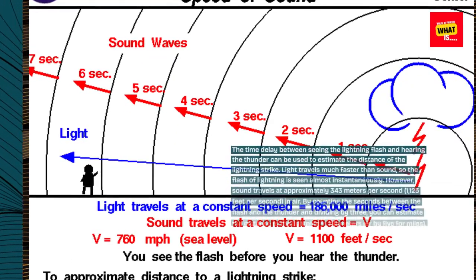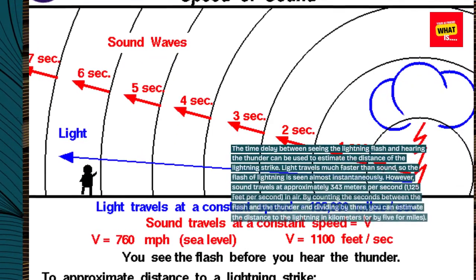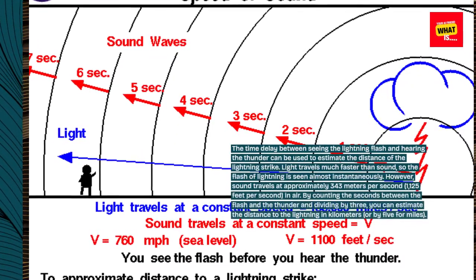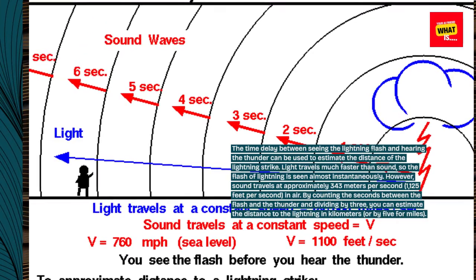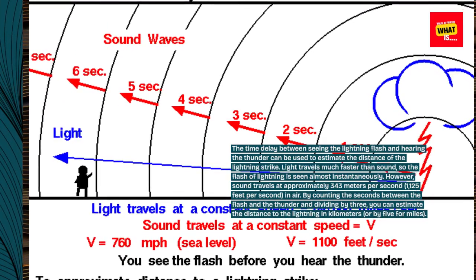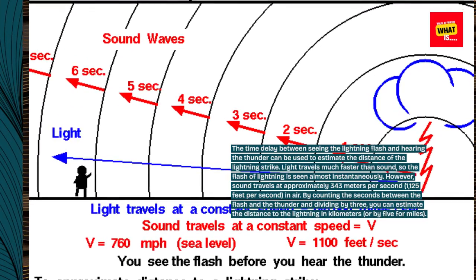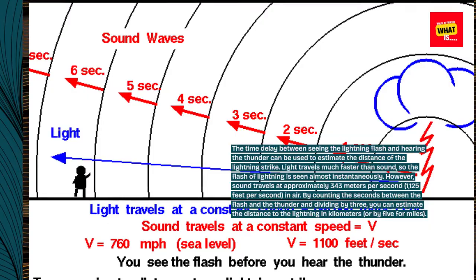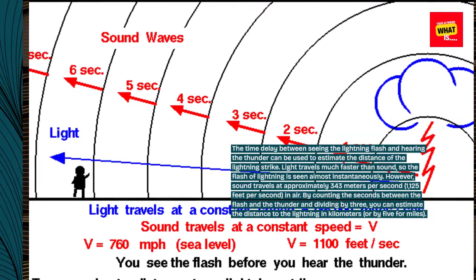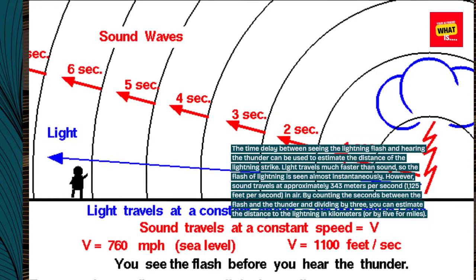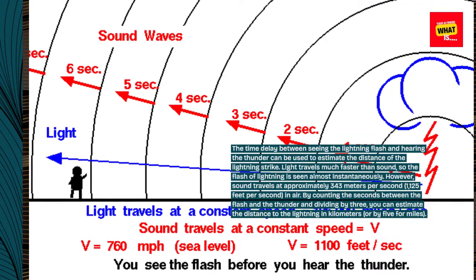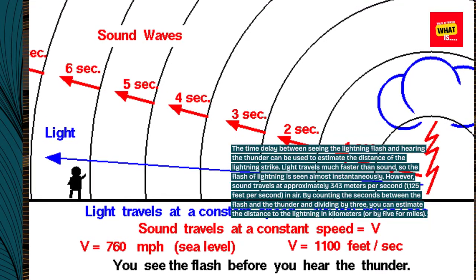Light travels much faster than sound, so the flash of lightning is seen almost instantaneously. However, sound travels at approximately 343 meters per second in air.